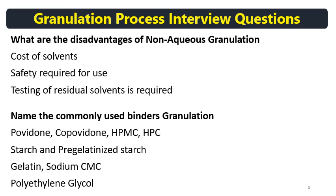Commonly used binders include povidone, polyvinyl alcohol, polypyrrolidones, PVP K30, co-povidone, hypromellose (HPMC), HPC, pre-gelatinized starch (PG starch), gelatin, sodium carboxymethyl cellulose (sodium CMC), and polyethylene glycol. These polymers have viscosity and can bind powder particles together, which is why they are used as binders.